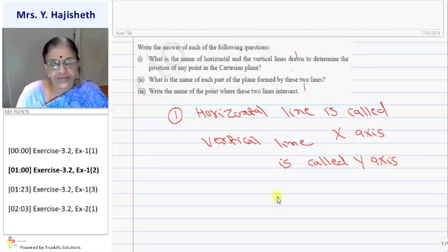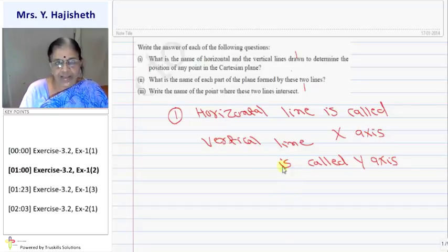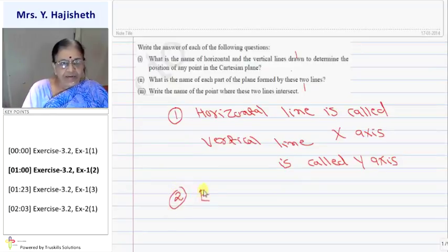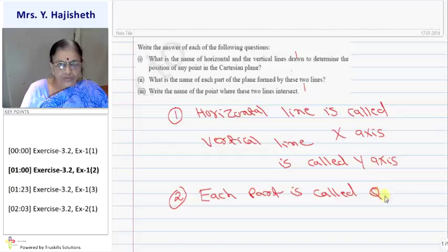Second question: what is the name of each part of the plane formed by these two lines? Each part is called a quadrant.